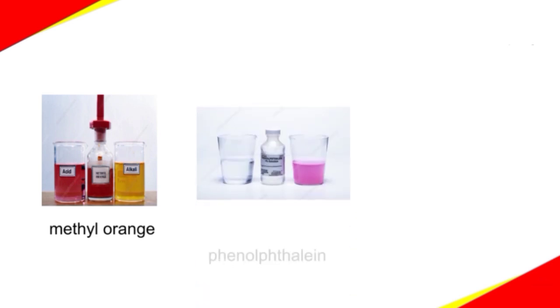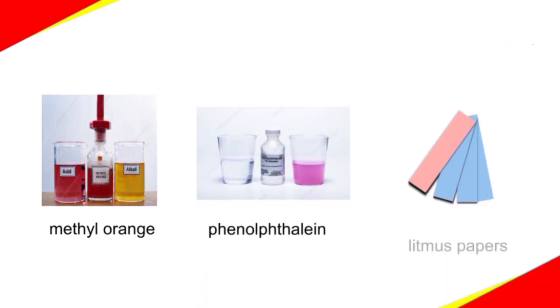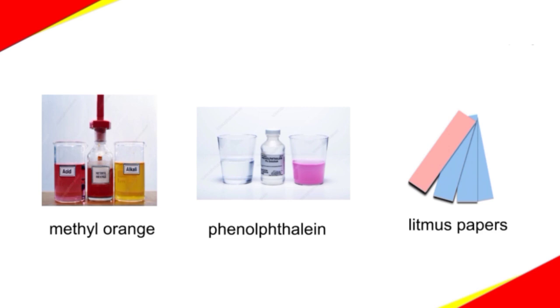Coming to the artificial indicators, we have methyl orange, phenolphthalein, and litmus papers. We also know litmus papers are of two types: red litmus paper and blue litmus paper.